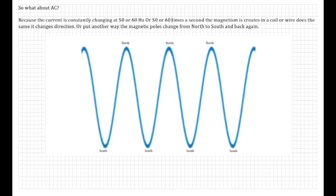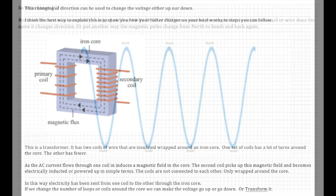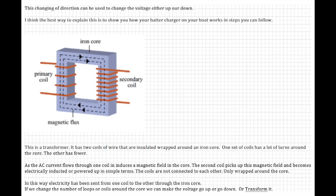So what about AC current? Well, because AC current is constantly changing direction at 50 or 60 Hertz depending where you live, that's 50 or 60 times every second, the magnetism it creates in the coil or wire does the same. It changes direction, or to put another way, the magnetic poles change from north to south and south to north. This changing of direction can be used to change the voltage either up or down. I think the best way to explain this is to show you how your battery charger works on your boat in a few steps that you can follow.